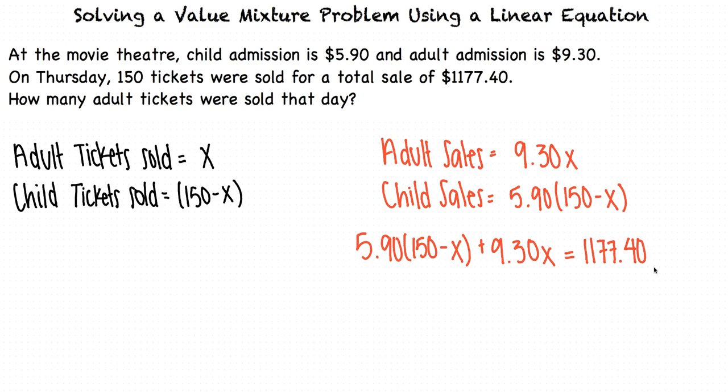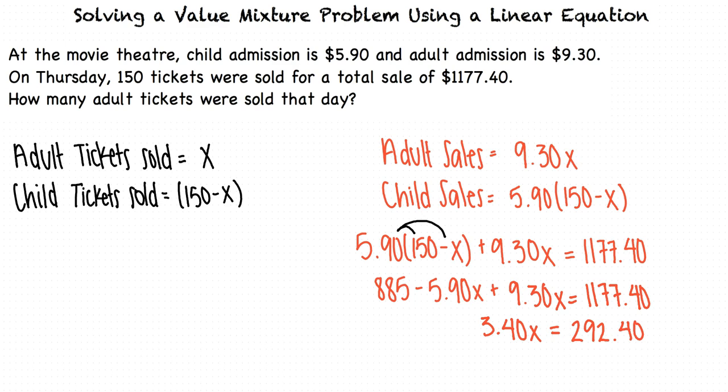Since we only have one variable in this equation, we can now solve for x. We'll start by distributing 5.90 to the 150 and the negative x. We can now combine like terms by adding negative 5.90x plus 9.30x to get 3.40x, and we can subtract 885 from both sides so that we get the x term by itself. Now we can divide both sides by 3.40 and we get that x equals 86.